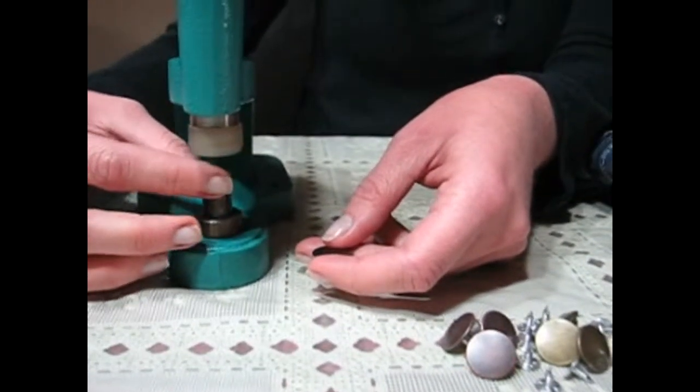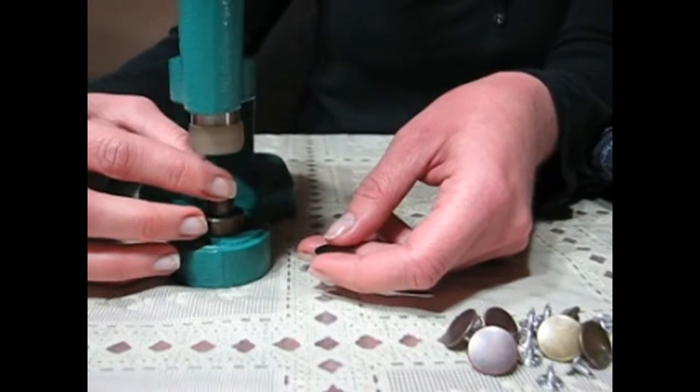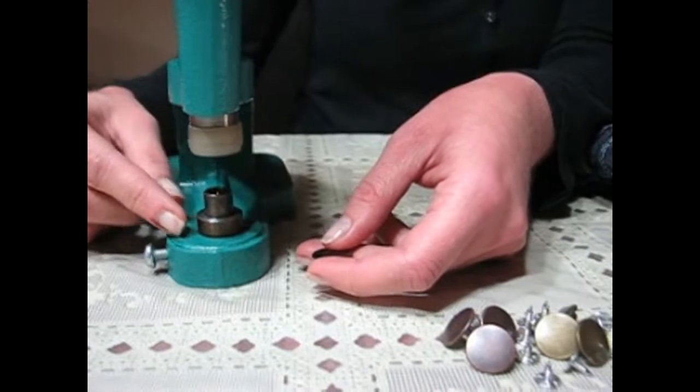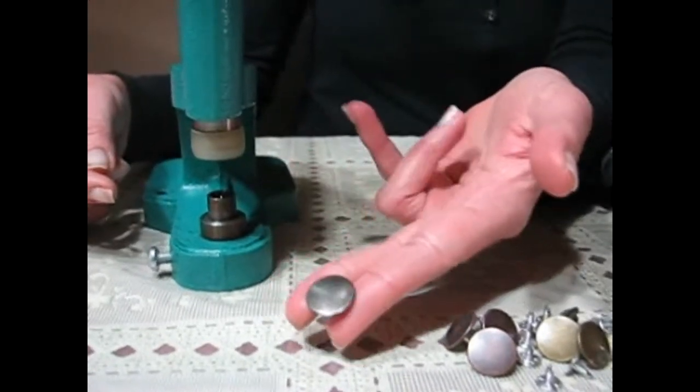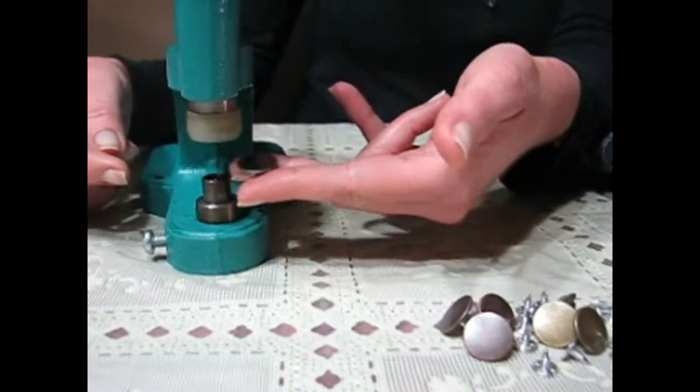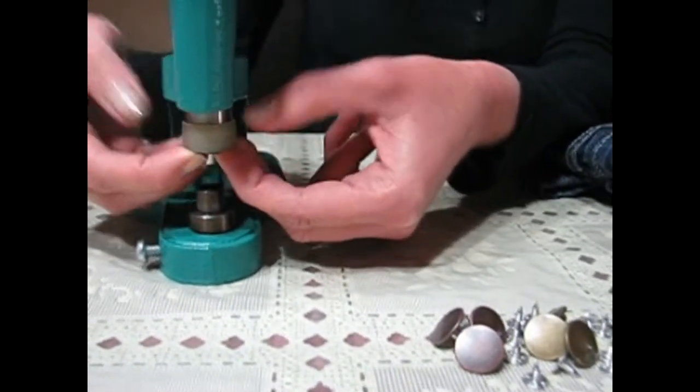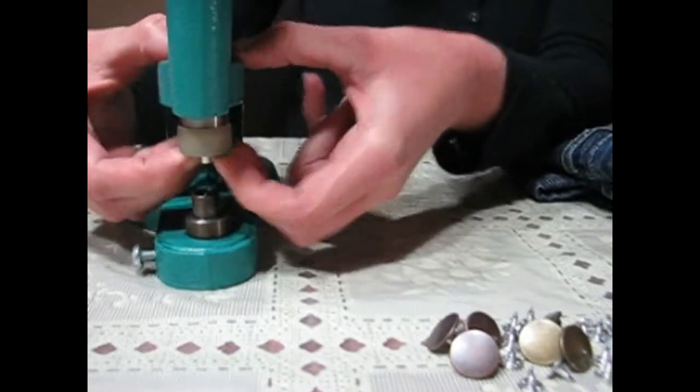I'm just going to put the tack with the point facing up into the bottom part of the die, and then my cap goes right into the top die where it will stay.